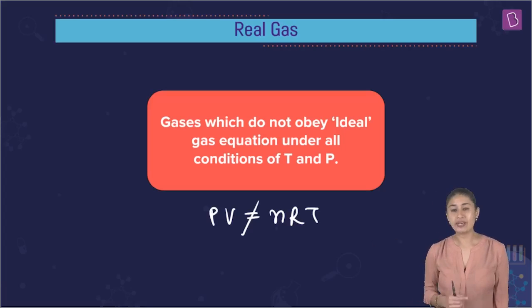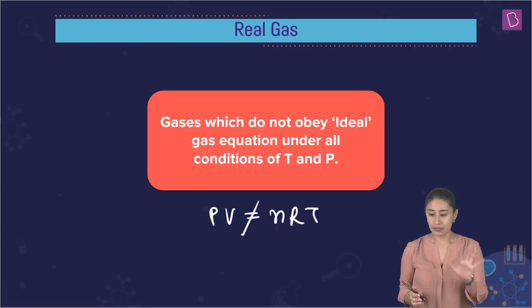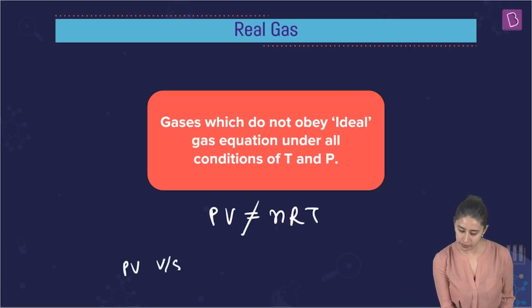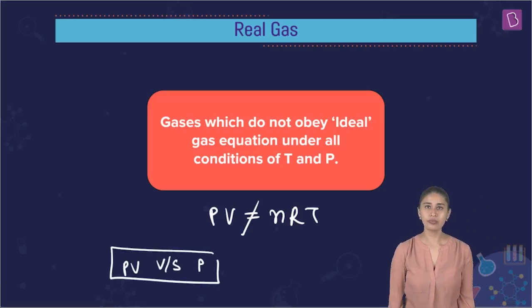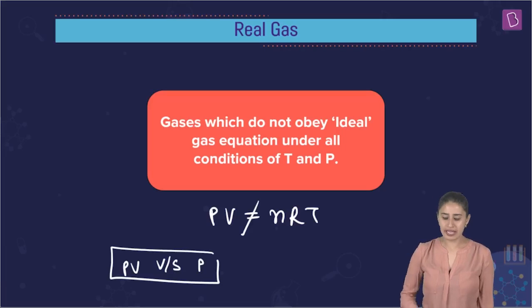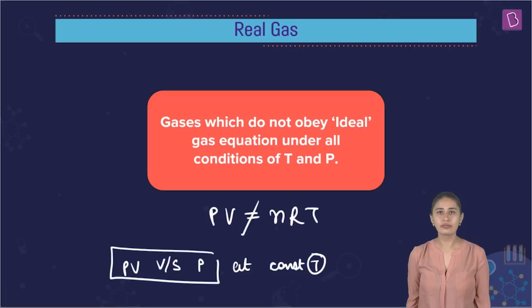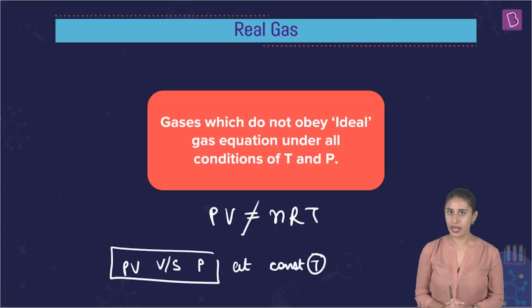Now, for more clarity, we need to have a look at very important PV versus P curve. PV versus P at constant T. Which law? Boyle's law. So again, we are applying Boyle's law. And you know that PV versus P, if we increase the pressure...